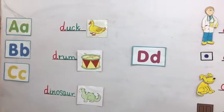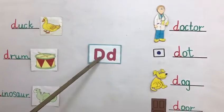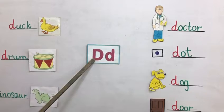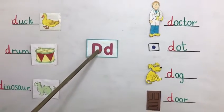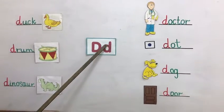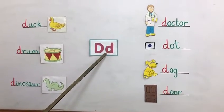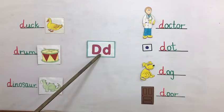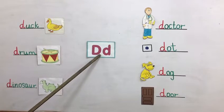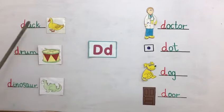Now we will come towards our letter D. This is capital D and this one is small letter D, and this is D. Let's see the vocabulary of D. There are the pictures which are starting from letter D.